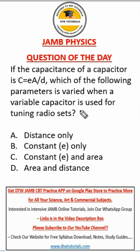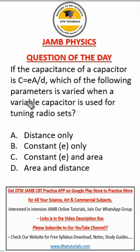Most variable capacitors in radio sets are air capacitors. And the dielectric for air — that's epsilon — is usually one. That's for air or vacuum, it's usually one. So this E will definitely just be a constant.